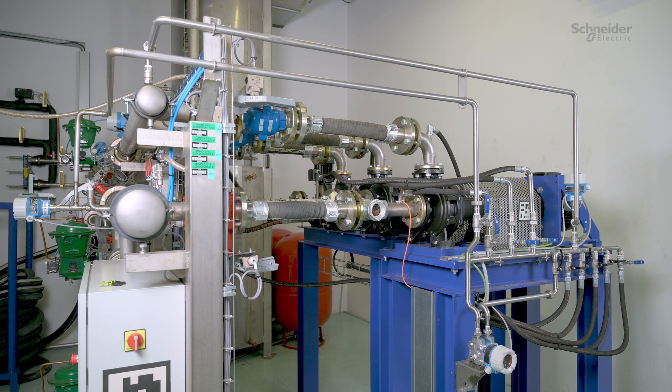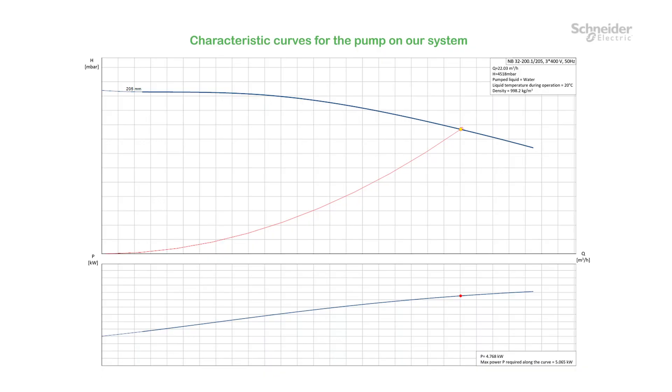You can apply this function to a centrifugal pump or any other pump with similar characteristics. The goal is to demonstrate the embedded features of Altivar Process ATV600. Pump characteristics curves are provided by the pump manufacturer.